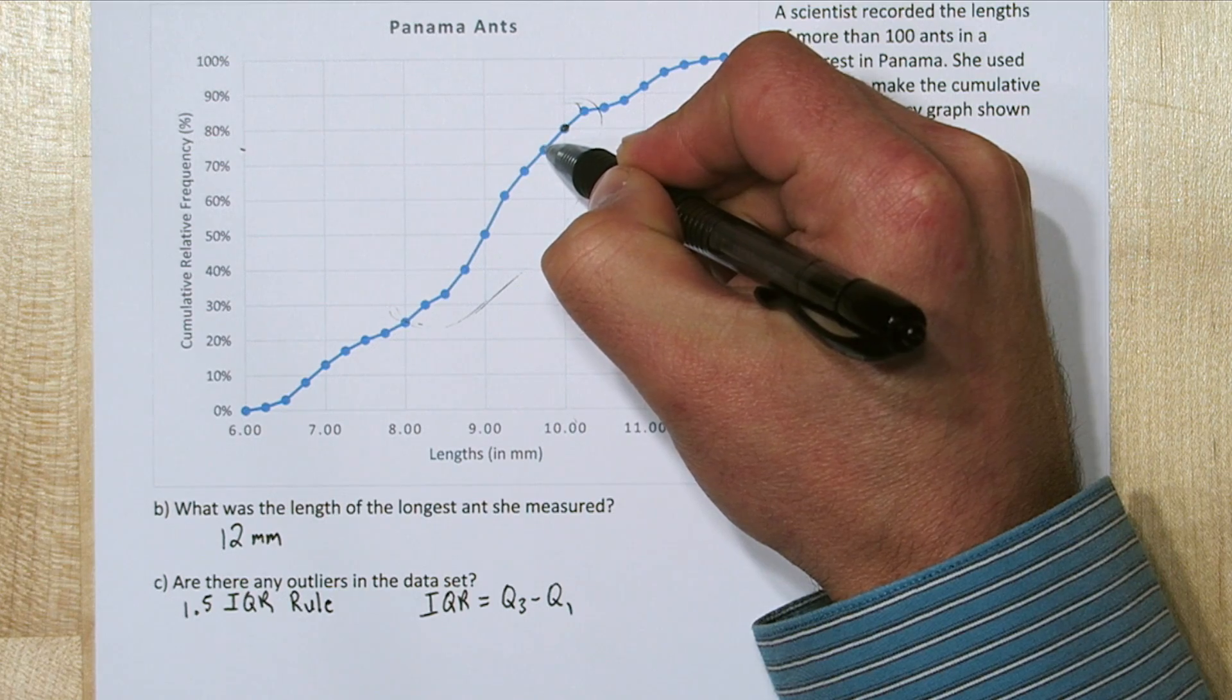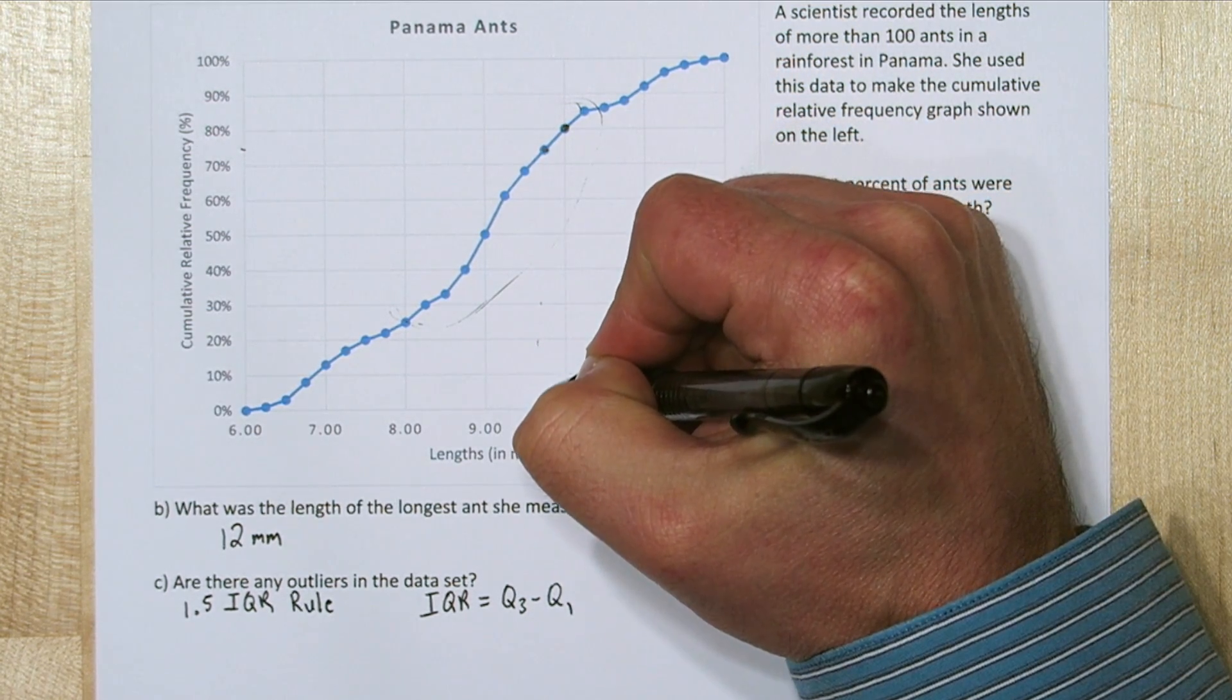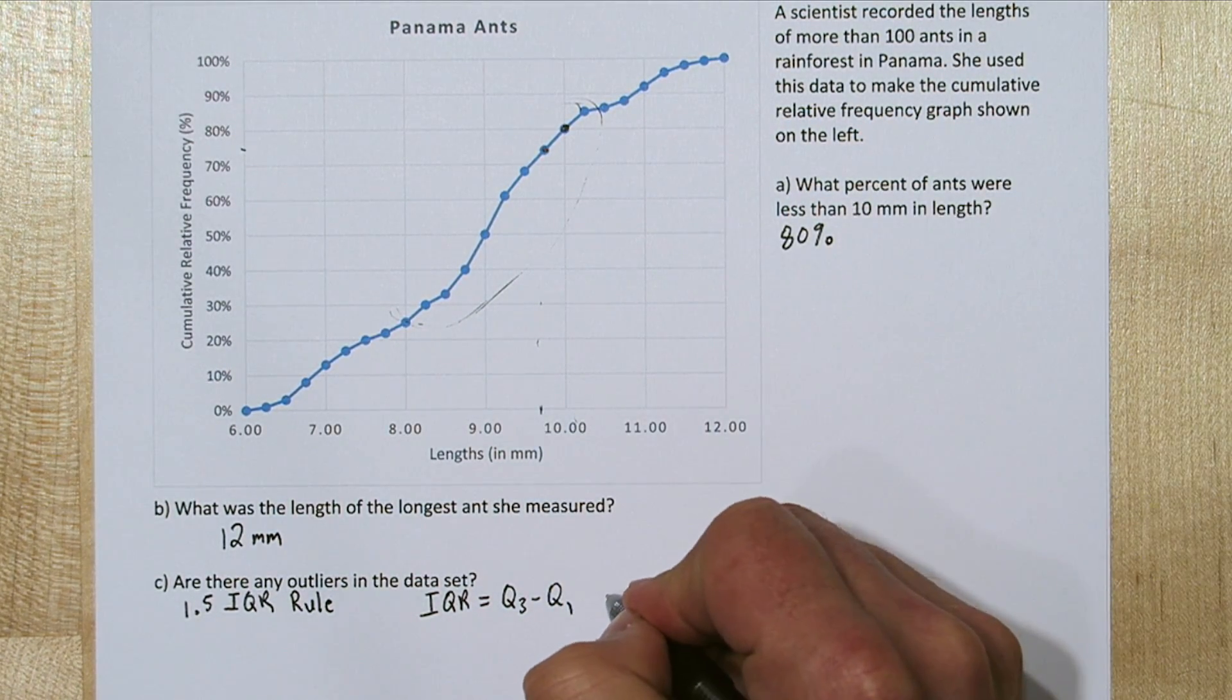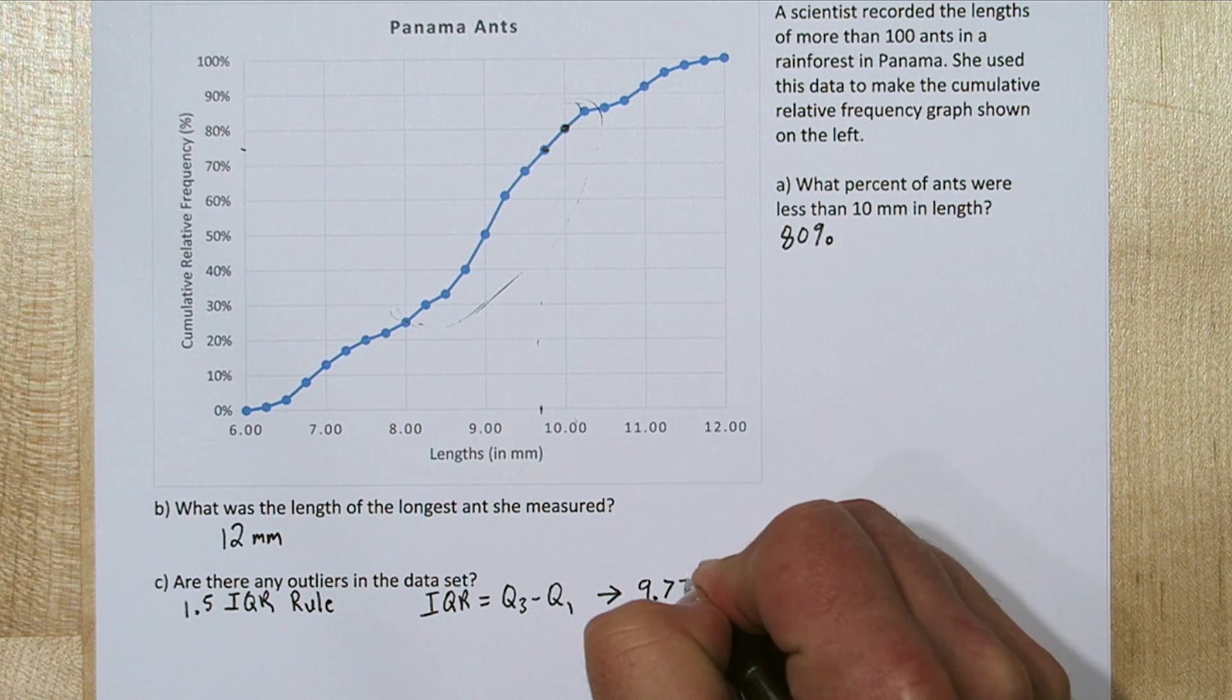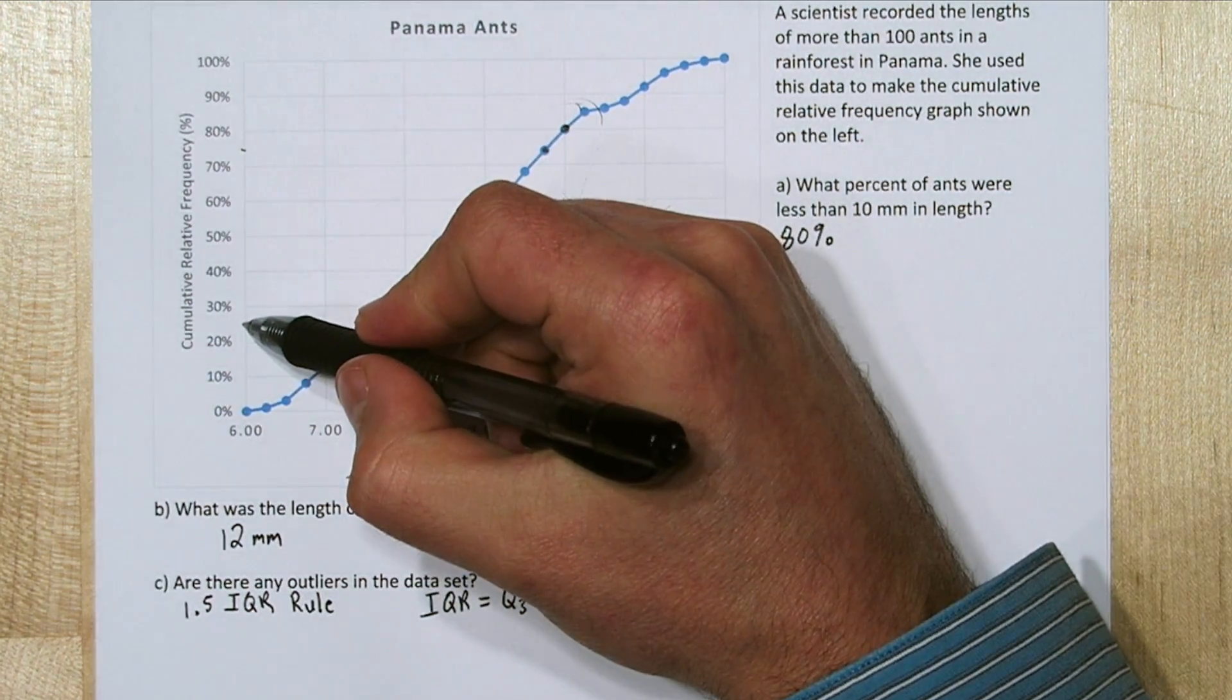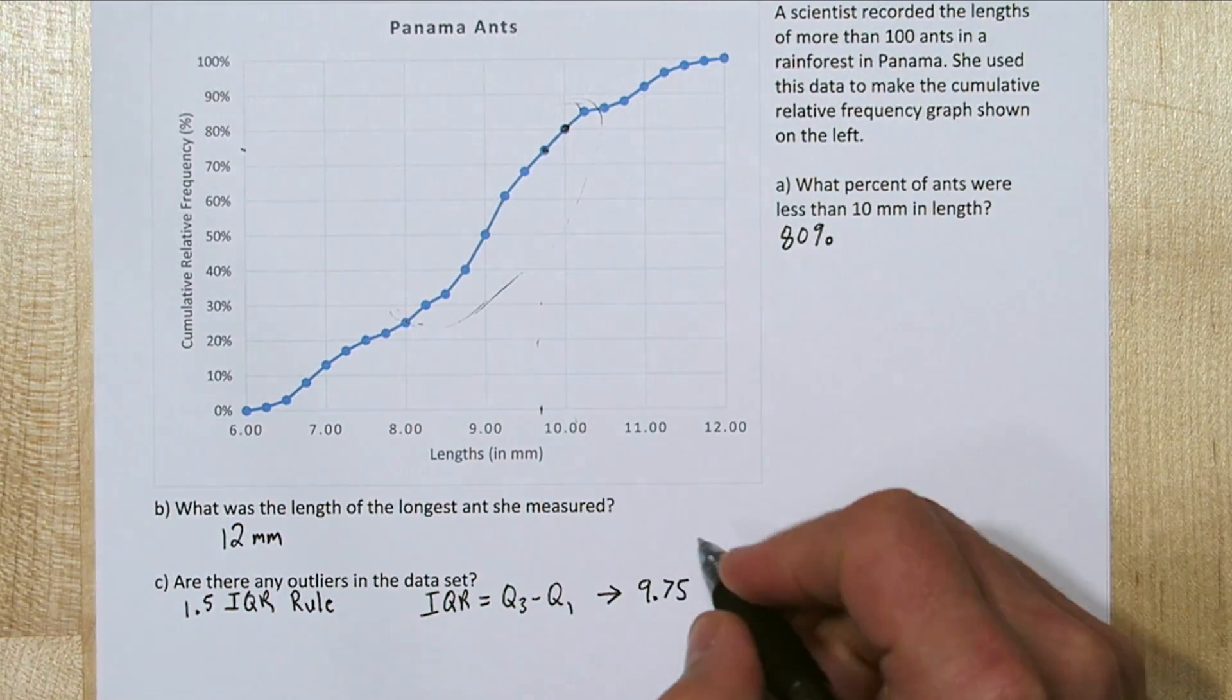Quartile 1 is what cuts off the lower 25% of ant lengths. So if we go to 25%, that one's dead on, it looks like it's at 8 millimeters.